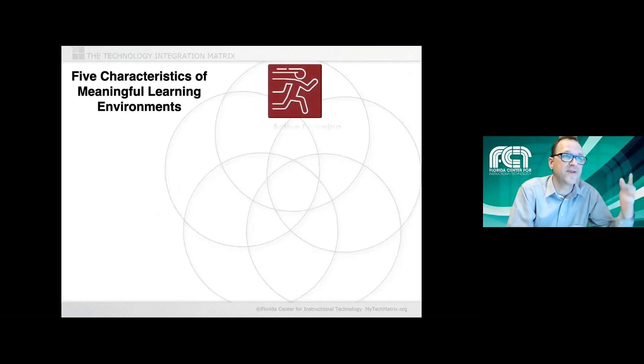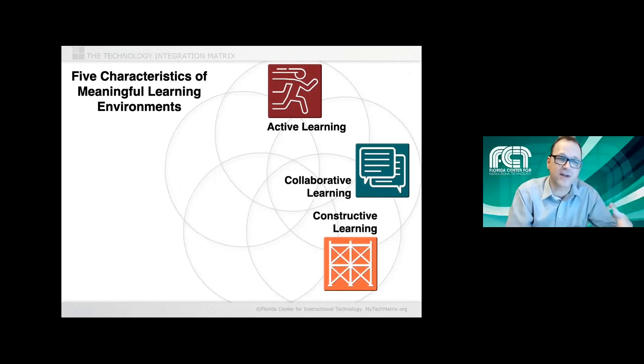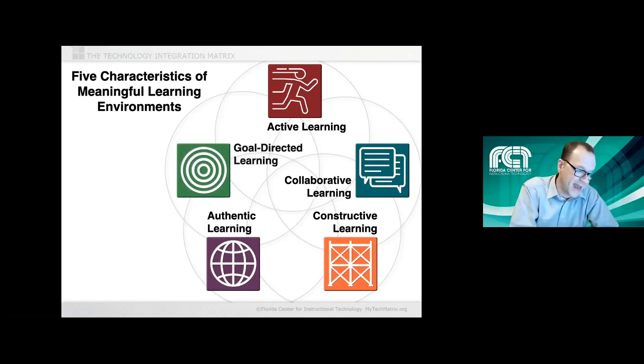Those five characteristics, active learning, collaborative learning, constructive learning, authentic learning, and goal-directed learning get at things that we know are important in teaching and learning. Actively engaging kids, having meaningful collaboration, supporting constructivist learning principles, and incorporating activities that have real application in students' lives, and helping students set a purpose for their learning, reflect on their learning.